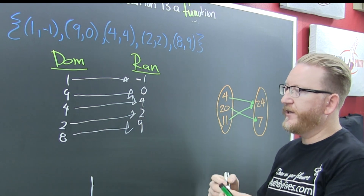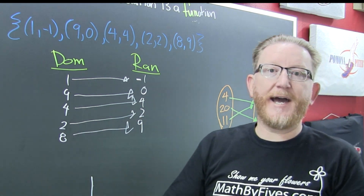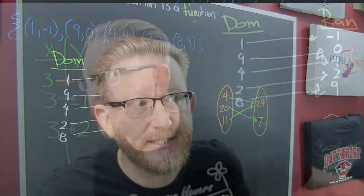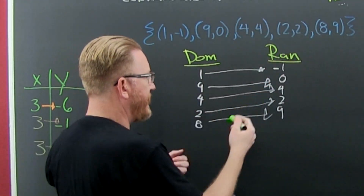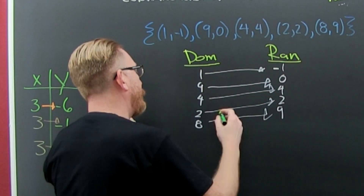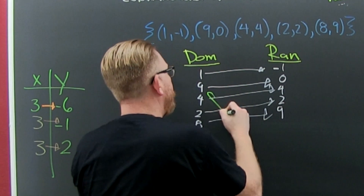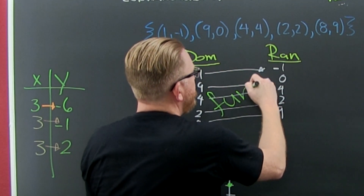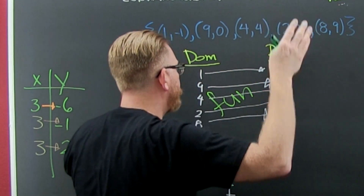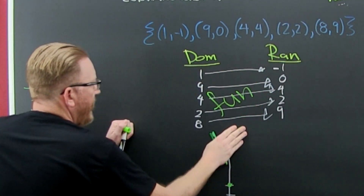So is this a function? Yes! This is a function because each first element corresponded to exactly one second element. F is for friends that do stuff together.